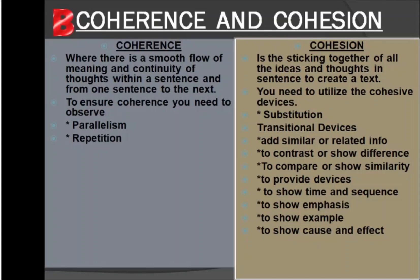Cohesion is the sticking together of all the ideas and thoughts in sentences to create the text. You need to utilize cohesive devices like substitution or transitional devices, which include: to add similar or related information, to contrast or show difference, to compare or show similarity, to provide examples, to show time and sequence, to show emphasis, to show examples, or to show cause and effect.